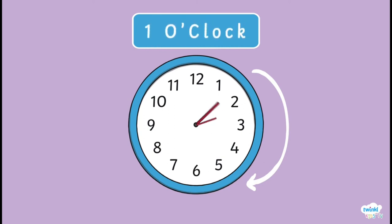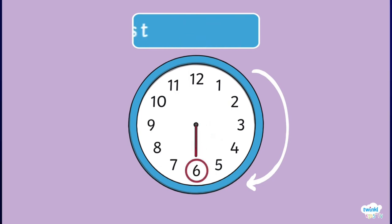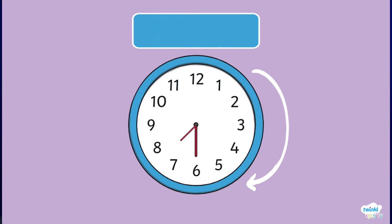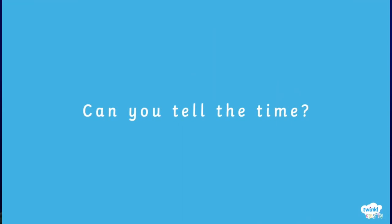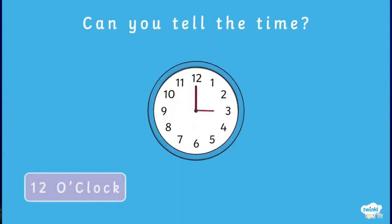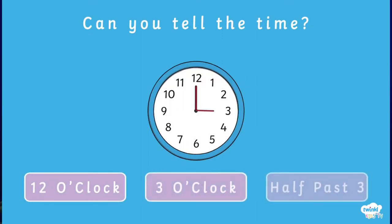When the minute hand — the bigger hand — gets to the number six, we say 'half past.' When the minute hand is pointing to the six and the hour hand is pointing to seven, we say the time is half past seven. Can you tell the time — is it twelve o'clock, three o'clock, or half past three?